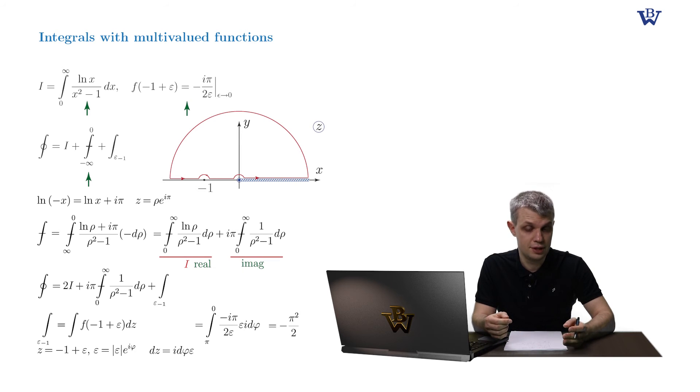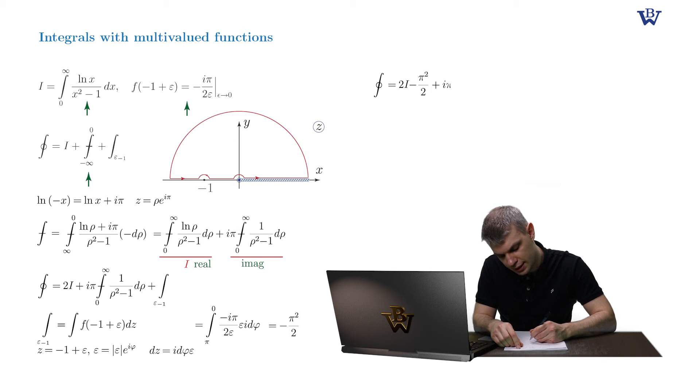So our initial goal is achieved. The closed contour integral is expressed as 2I minus π squared by 2 plus the remainder term iπ times the principal value integral dρ over ρ squared minus one.